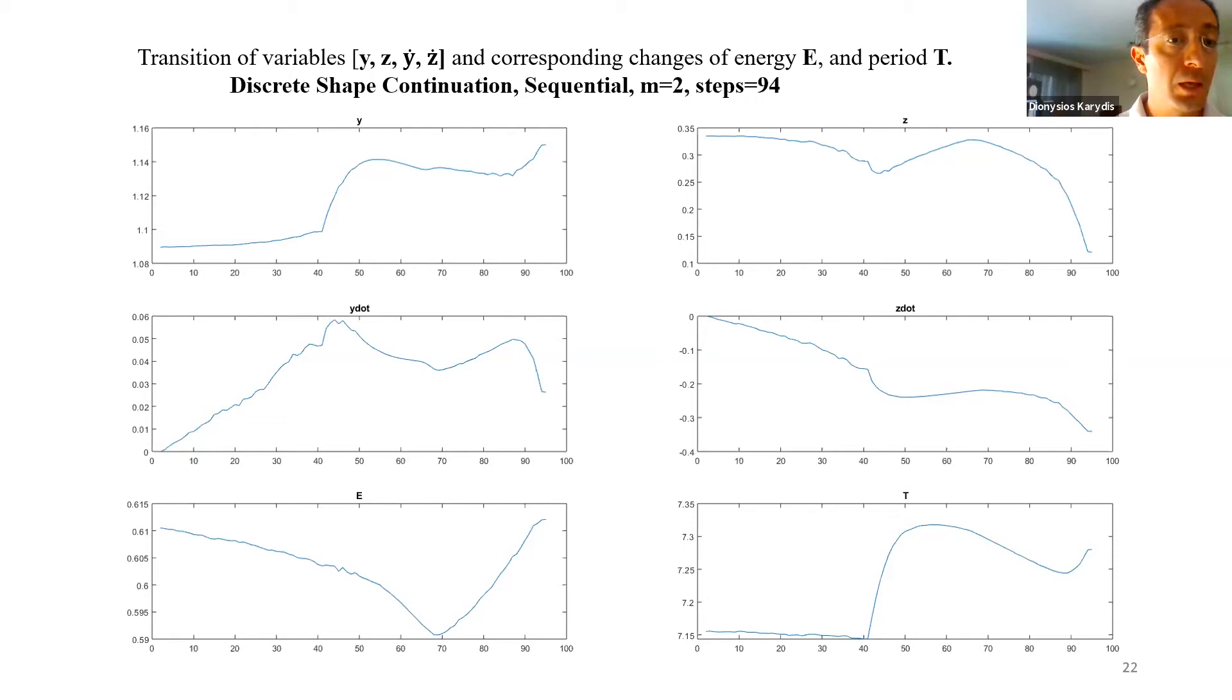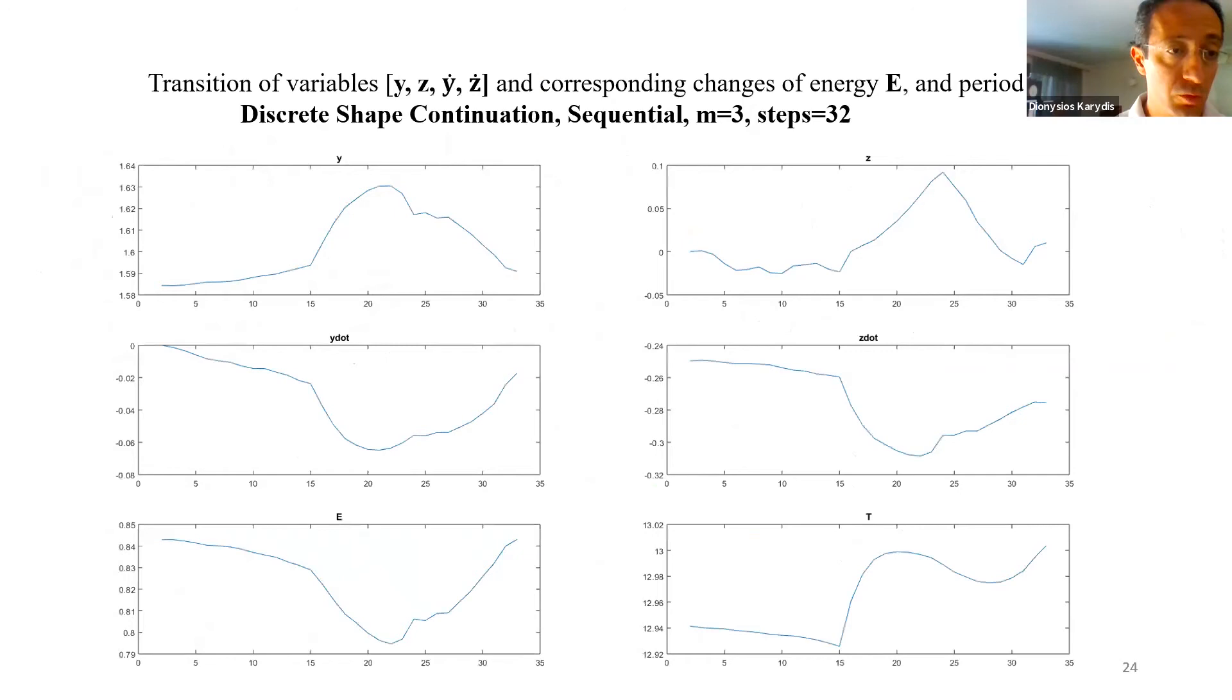This is a similar figure showing a transition for an orbit of multiplicity 3, and for the same continuation, the transition of variables is shown at the multiple plot figure. The steps used here were only 32.